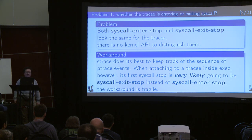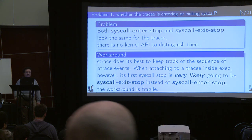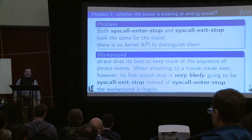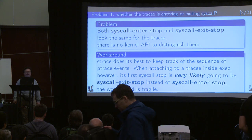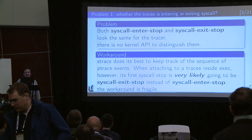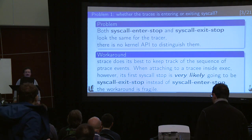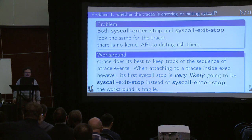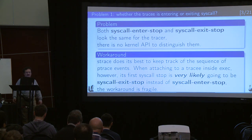There are other kinds of stops that are not syscall-stops, but there is no way to distinguish them. And when something odd happens - for example, when you attach to a tracee which is inside exec - the first syscall-stop is actually not an enter-stop, but an exit-stop. And everything gets completely confused. We implemented a workaround for this, but it's really fragile, because there is no guarantee that the first syscall-stop is going to be an exit-stop when you are attaching to a process that is inside exec.